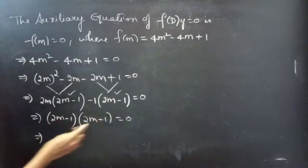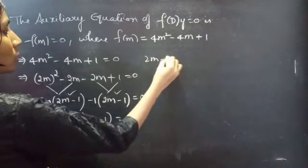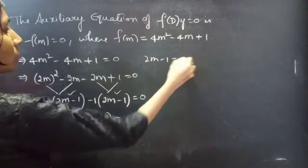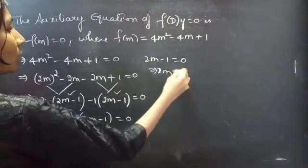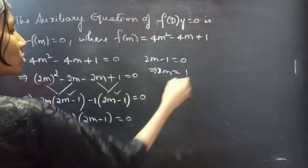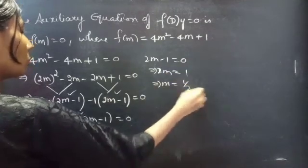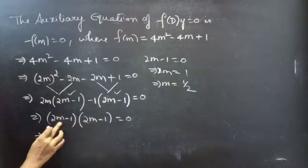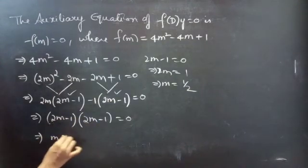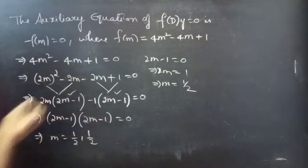Now equate each factor to 0. From 2m minus 1 equals to 0, take minus 1 to the RHS: 2m equals to 1, so m equals to 1/2. Since we have two identical (repeated) factors, both roots give m = 1/2. So the roots are equal.